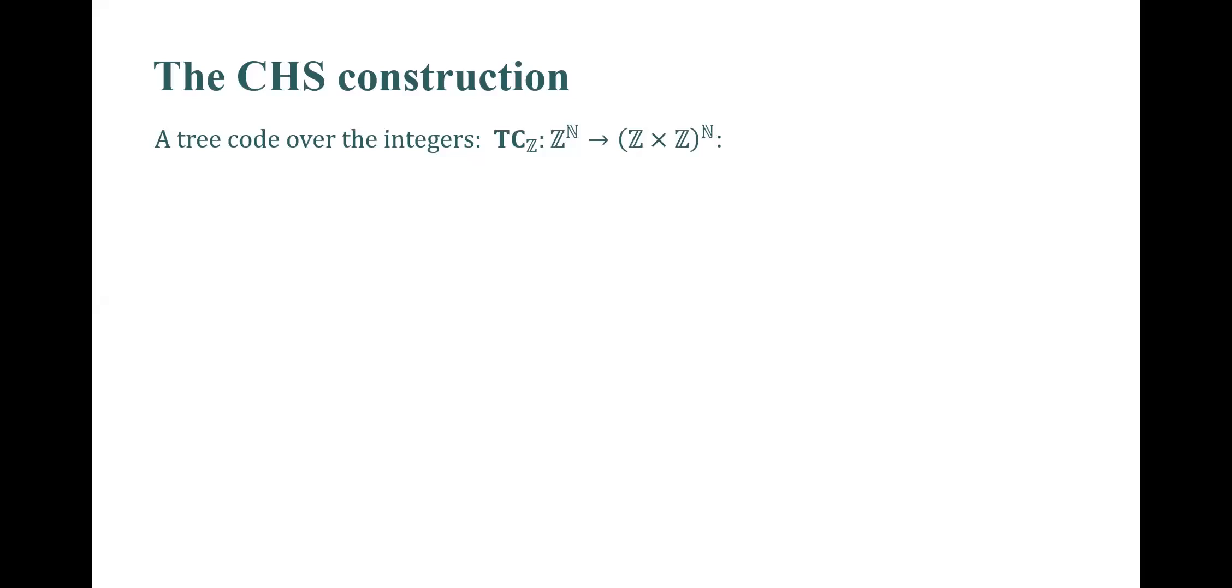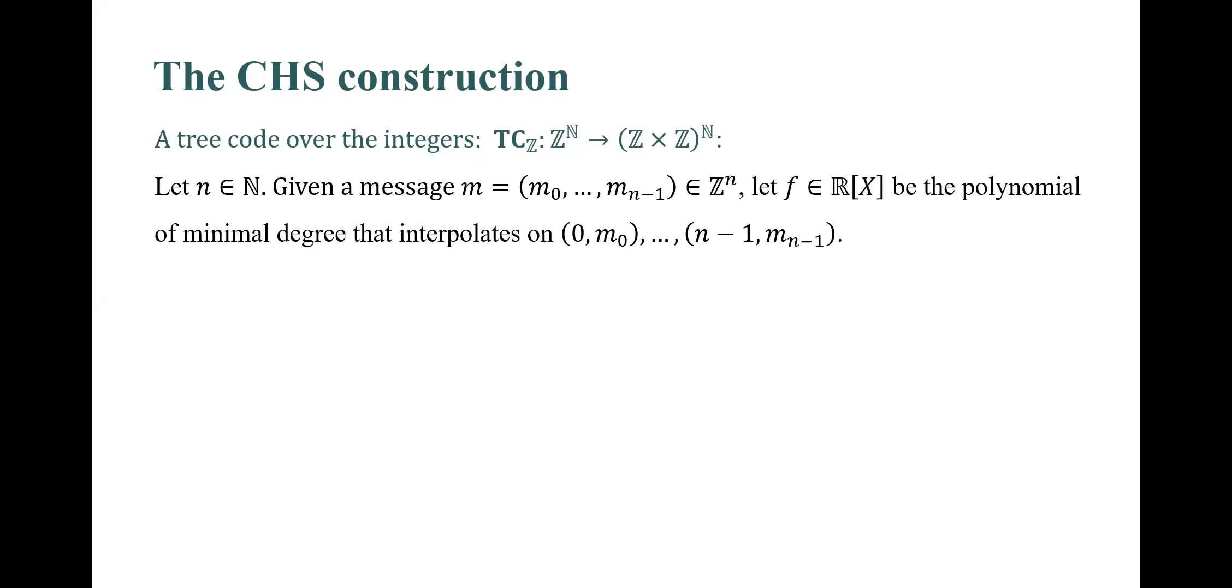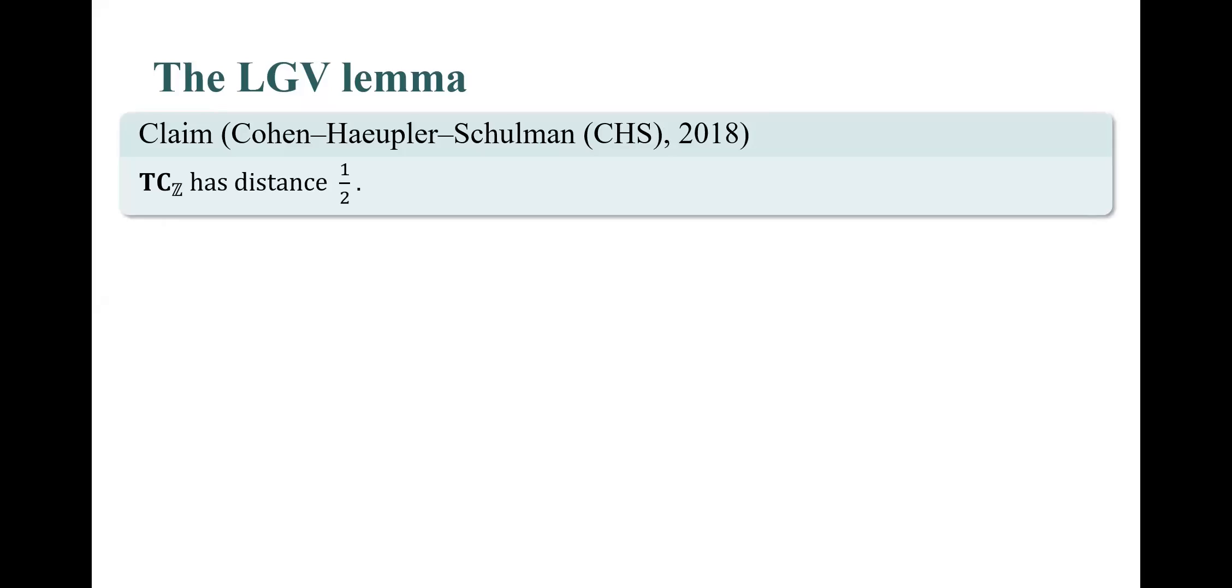First, CHS constructed the tree code over the integers. Let n be a positive integer. Given a message m of length n, let f be the polynomial of minimal degree that interpolates on the following points. Now consider the expansion of f in the Newton basis. On time t, the tree code outputs the tuple m_t, gamma_t, where m_t is the t input symbol and gamma_t is the coefficient of the Newton polynomial x choose t. Note that this is well-defined since one can prove that for any index i, gamma_i is an integer.